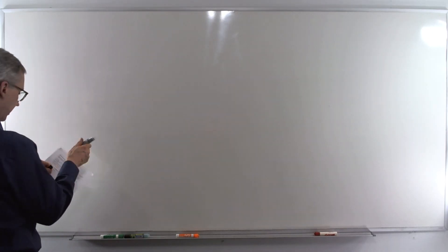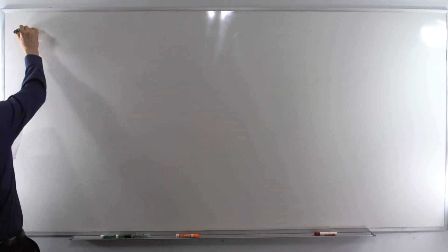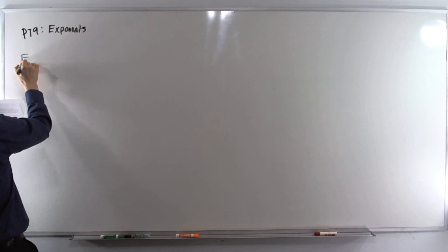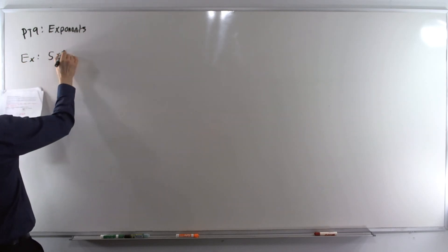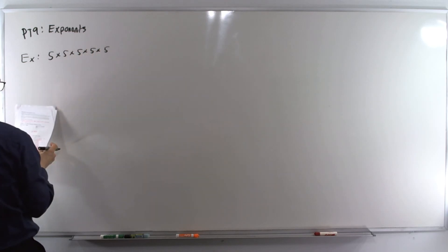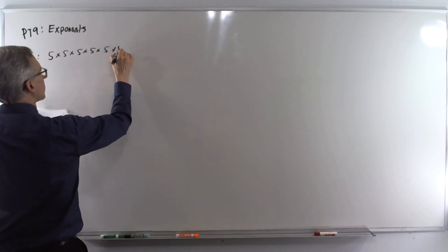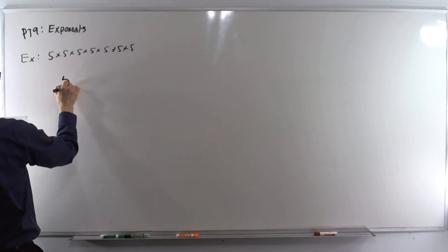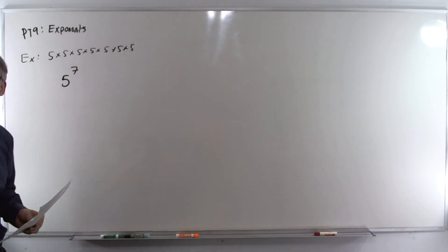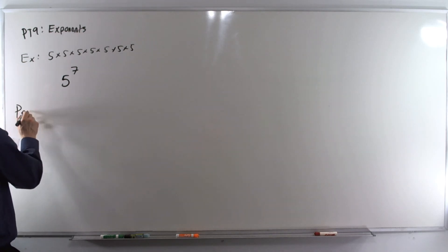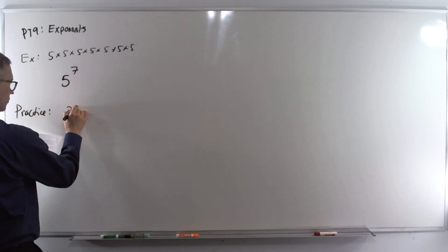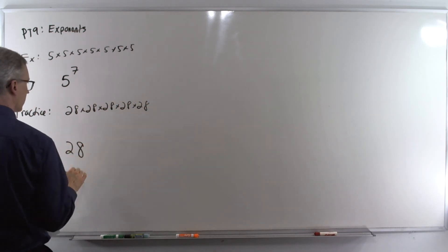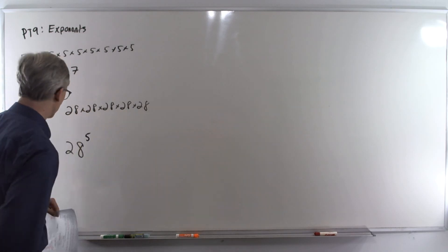Problem type 9, we're going to write a product in exponent form. For example, we are given a bunch of fives being multiplied. That's seven fives being multiplied. The number being multiplied is the base, the number of times it appears is the exponent. So that is 5 to the seventh power. Practice. Write that in exponent form. 28 is the number being multiplied, and it appears five times. 28 to the fifth power.